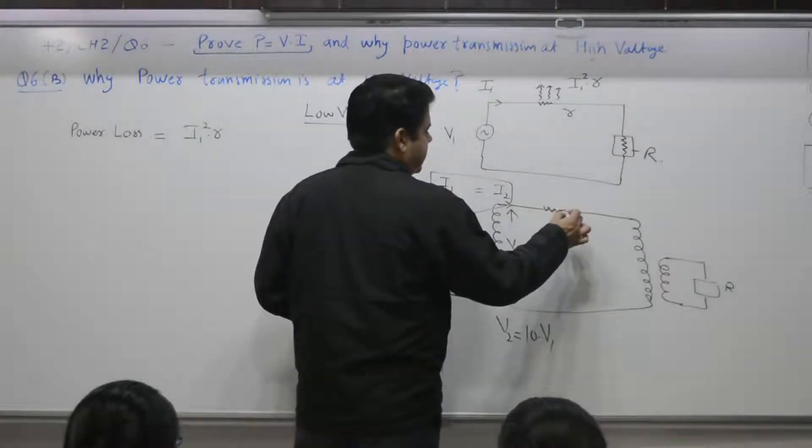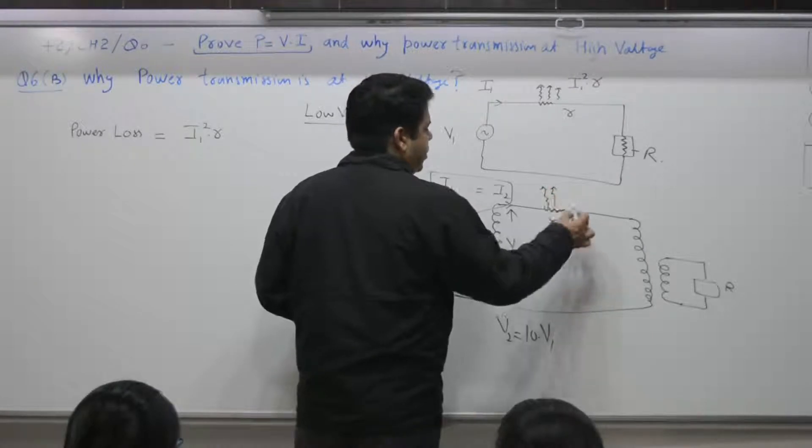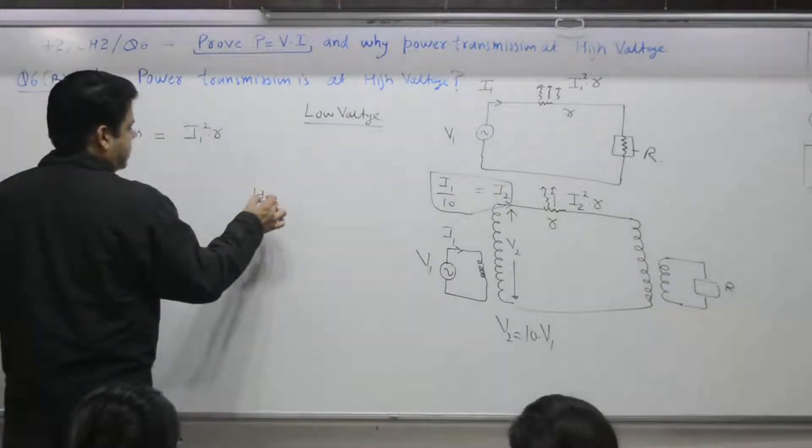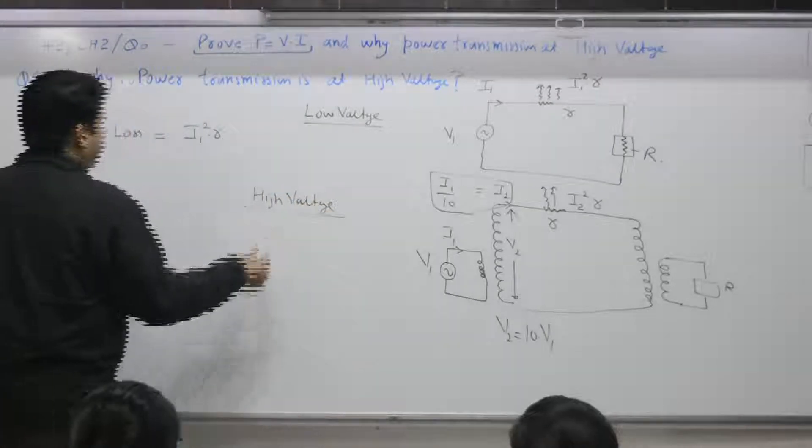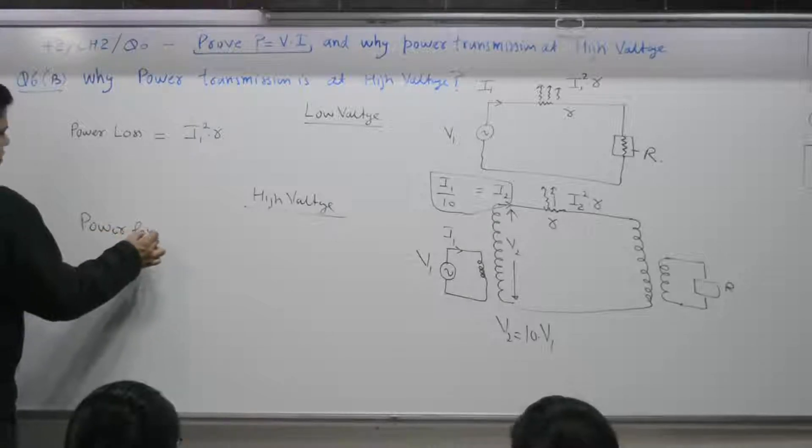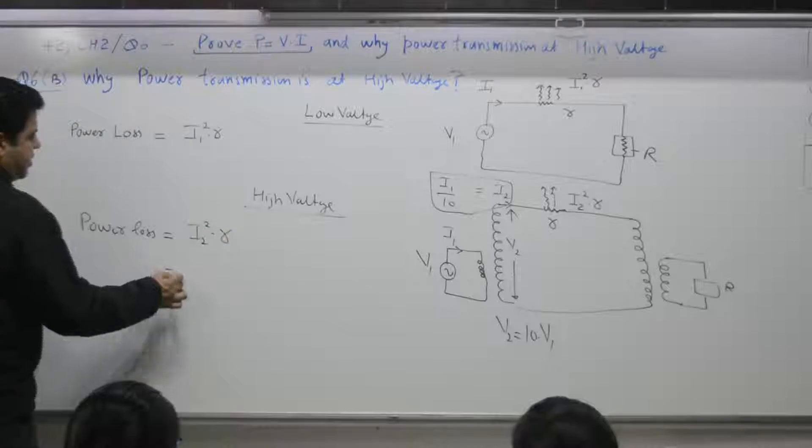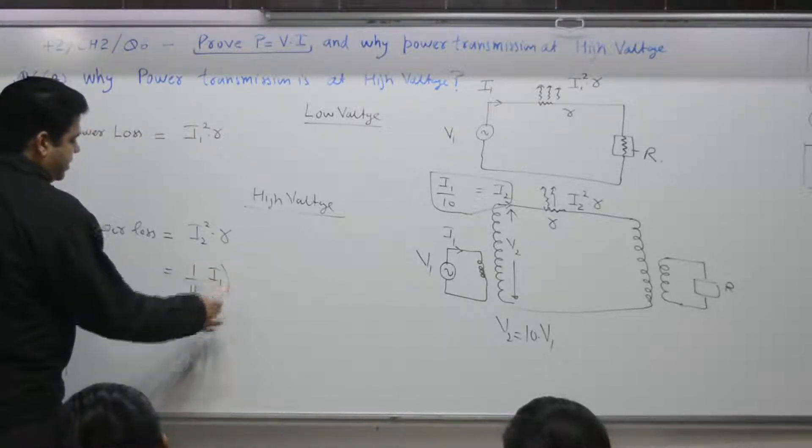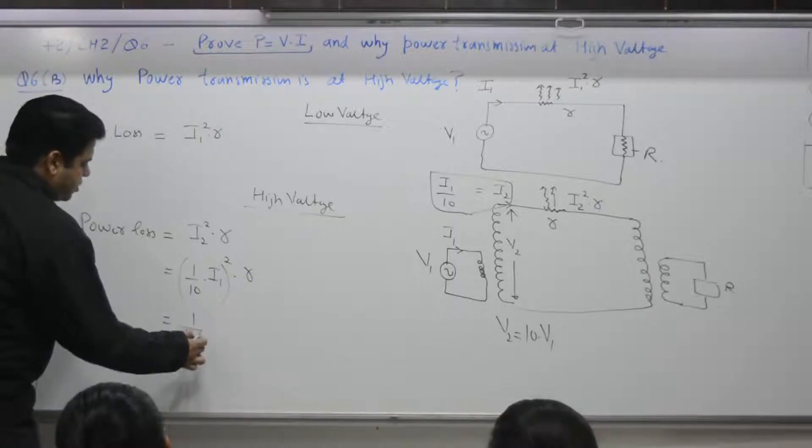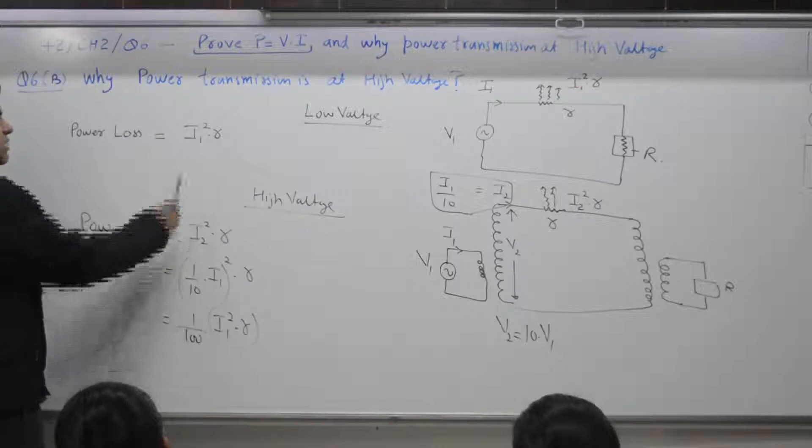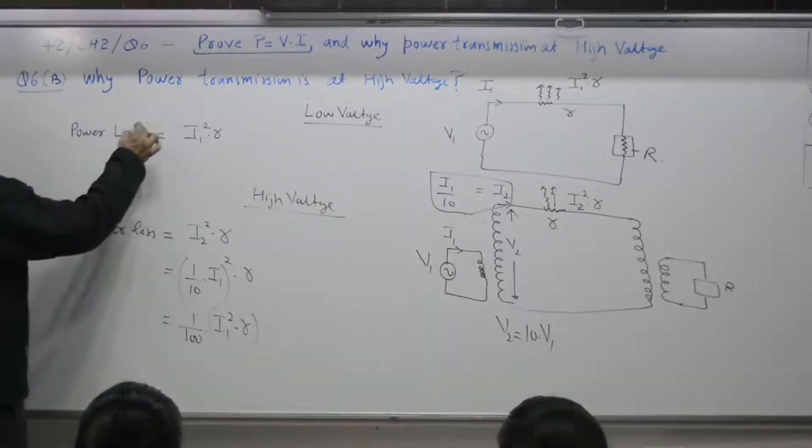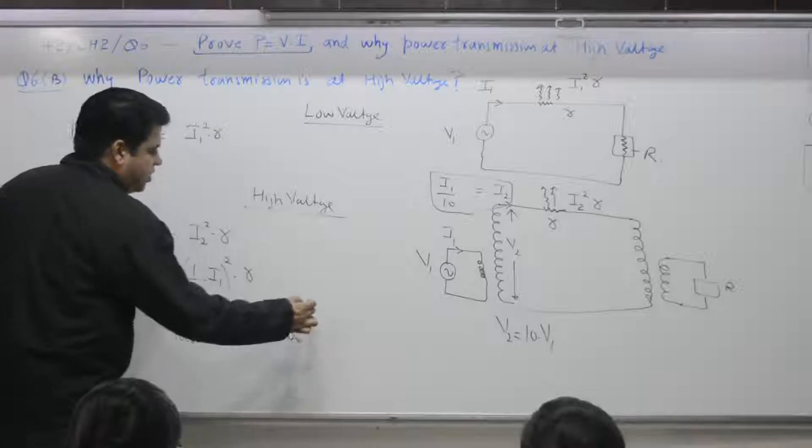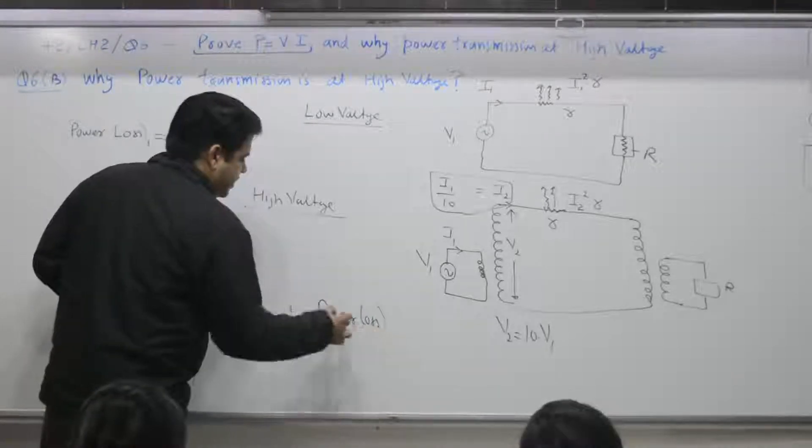Now, second case. Loss is how much? I2 is how much? I2 square into R. Second scenario. This is first case, low voltage. Second case is high voltage. Power loss. Second case is I2 square into R. I2 is 1 by 10 of I1. It is 1 by 100. I1 square into R. What is I1 square? Power loss case number 1. It is power loss case number 2. It is what? 1 by 100 of power loss case number 1.